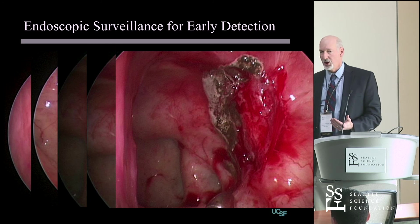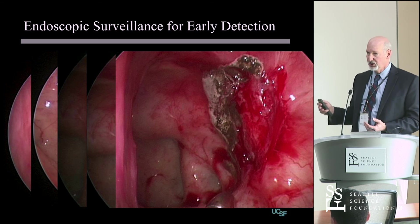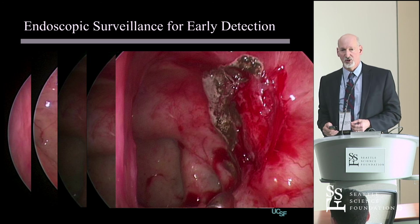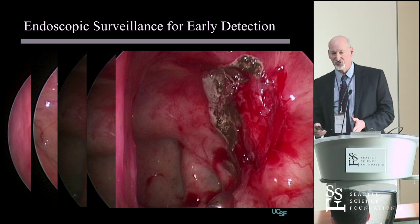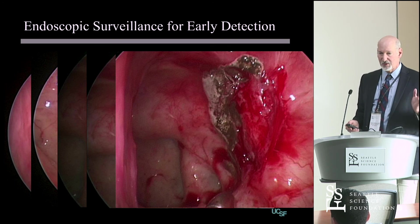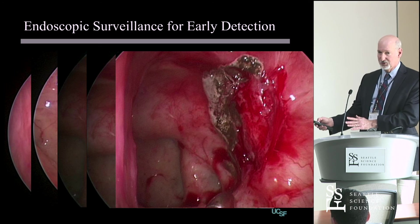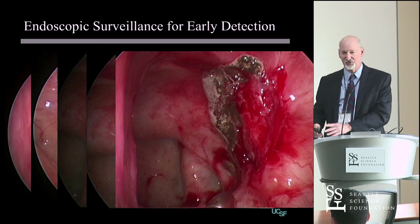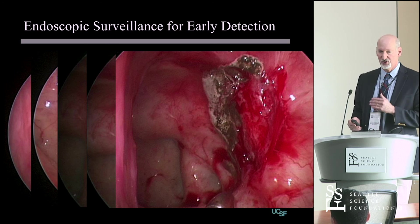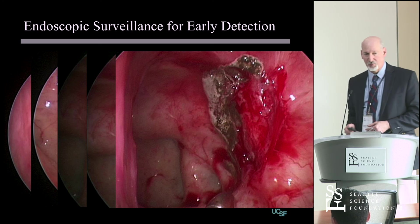My surveillance protocol for these patients is to follow them about every four months for the first two years — ninety percent of patients who recur will recur in the first two years. Then every six months until five years, and then approximately yearly. I tell them in advance before surgery: we're going to have a nice long relationship. Every four months for two years, then every six months, then every year — so they know what they're getting into.